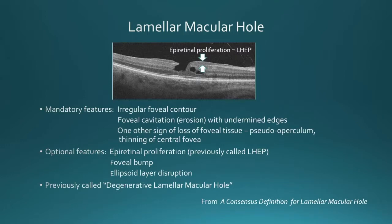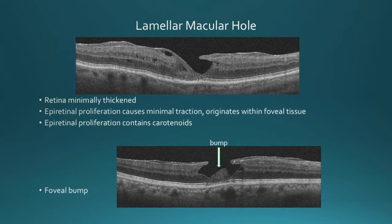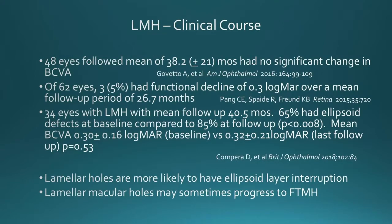In other cases, you frequently see a foveal bump and ellipsoid layer degeneration. This was previously called the degenerative lamellar macular hole. In these cases, the retina is usually minimally thickened. The epiretinal proliferation usually originates from the foveal tissue and extends onto the surface of the retina. This proliferation contains carotenoids and has a characteristic yellow appearance when you remove it. On the lower slide, you see the typical foveal bump, which is commonly seen in this condition.